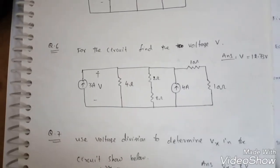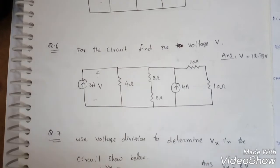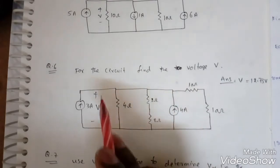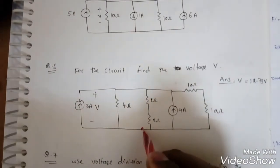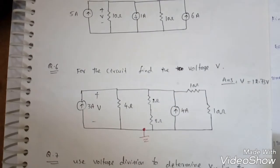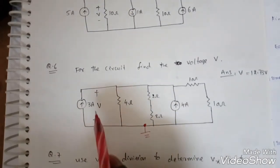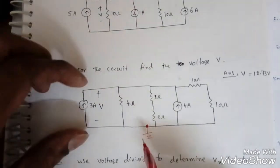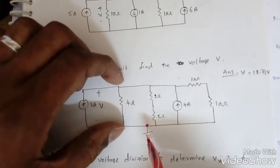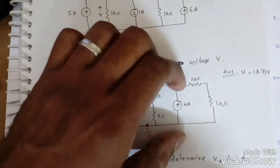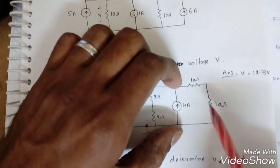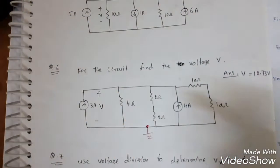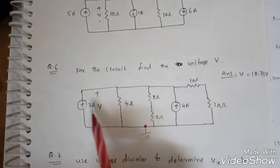We will do some more problems on KCL, KVL, and equivalent resistances. The next question asks us to find the voltage V in the circuit. Using the same procedure, we first make a reference ground. If you observe carefully, the voltage across the current source is the same as across the 4-ohm and the two resistances in parallel — all voltages will be the same.